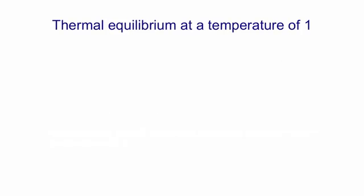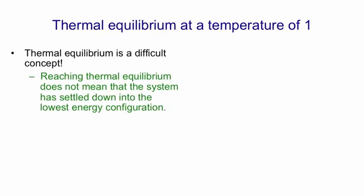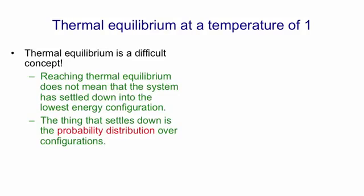One concept you need to understand in order to understand the learning procedure for Boltzmann machines is thermal equilibrium — and because we're setting the temperature to one, it's the concept of thermal equilibrium at a fixed temperature. Most people think that it means the system has settled down and isn't changing anymore, but it's not the states of the individual units that have settled down. The thing that settles down is the probability distribution over configurations. That probability distribution settles to a particular distribution called the stationary distribution, which is determined by the energy function. In the stationary distribution the probability of any configuration is proportional to e to the minus its energy.